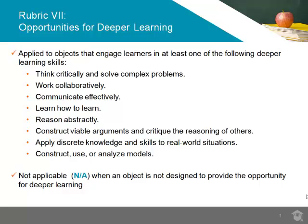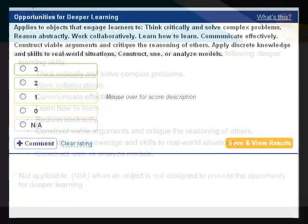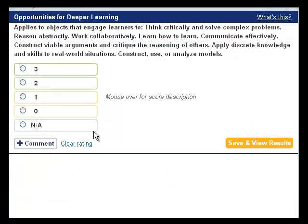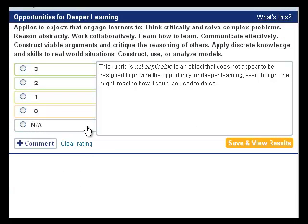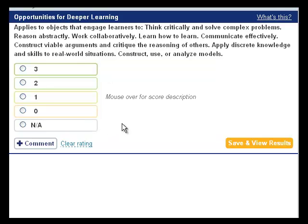And construct, use, or analyze models. Users should assign an NA rating to objects that are not intended to provide opportunities for deeper learning, even if you can imagine ways that it could do so.